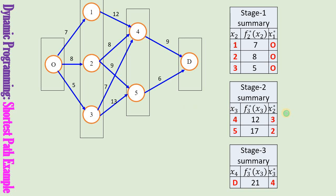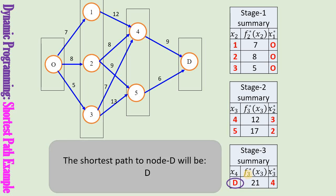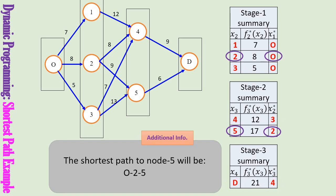Now, how do we obtain the shortest path? We look at the summary tables and read them in backward order. To reach node D, the best start state is 4. To reach node 4, the best start state is 3. And to reach node 3, the best start state is O. Therefore, O→3→4→D is the shortest path from origin to destination, with a total distance of 21 units. Using the forward recursion results, we can also find that the shortest path to reach node 5 is O→2→5, and to reach node 4 is O→3→4.